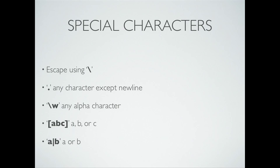More special characters: like many other languages, we escape using the slash. We use the dot to specify any character except a new line. We use \w to specify any alphabetical character, and by analogy, \d for any integer numerical character. We can use brackets to specify related expressions — for example, [abc] would accept a, b, or c. We can also specify OR options for either a or b using the pipe operator.